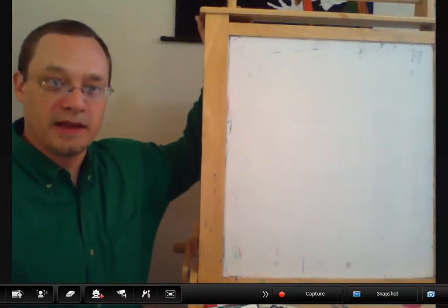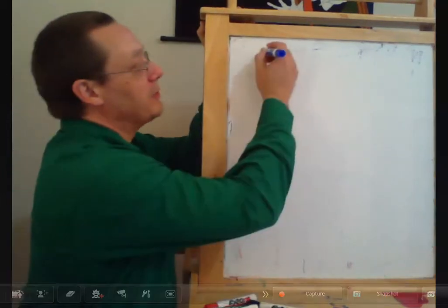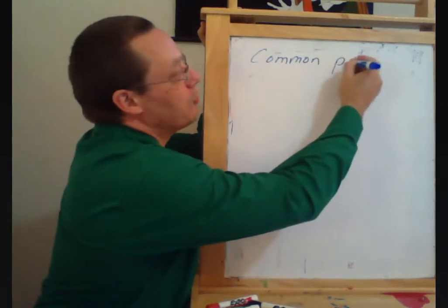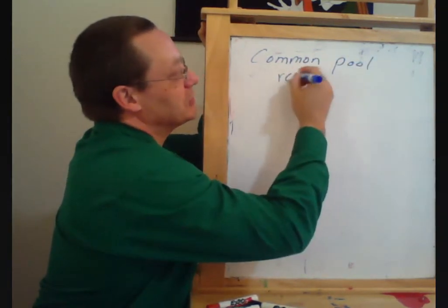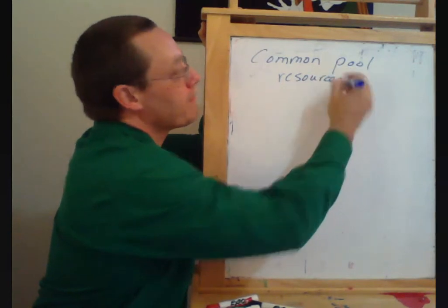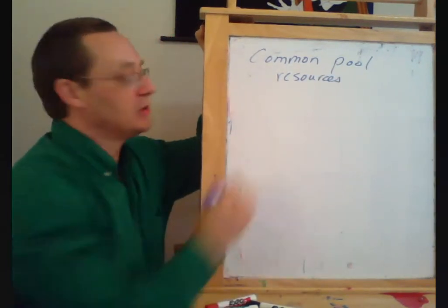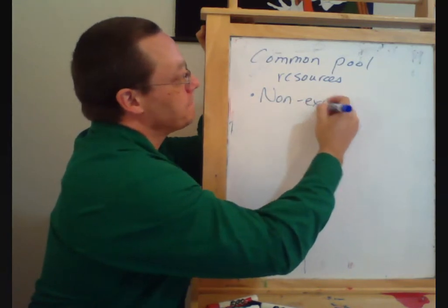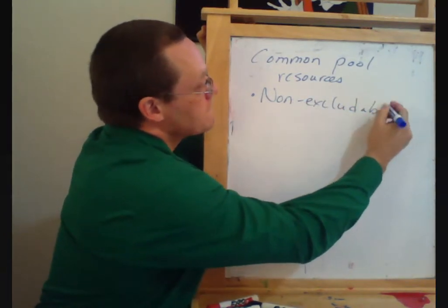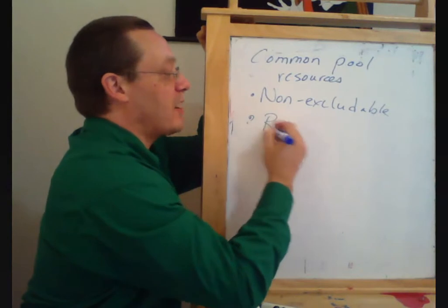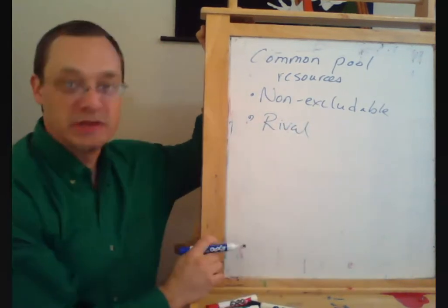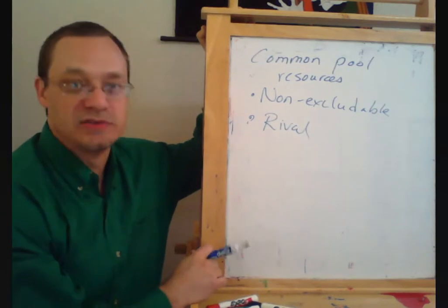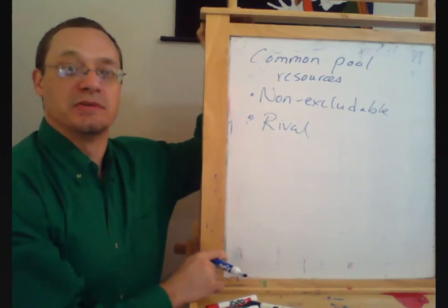Let's talk about what are called common goods, or sometimes common pool resources. These are goods that are non-excludable but rival — we can't stop people from using them, and one person's use makes another person worse off.